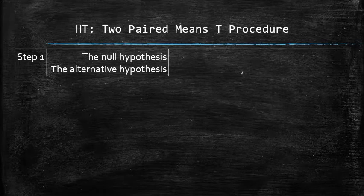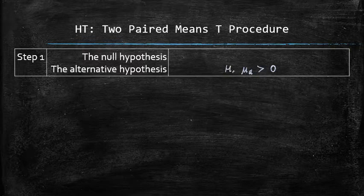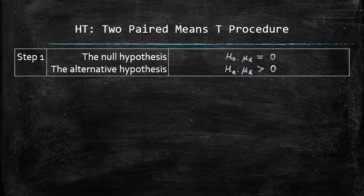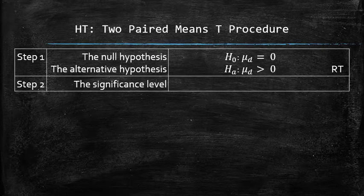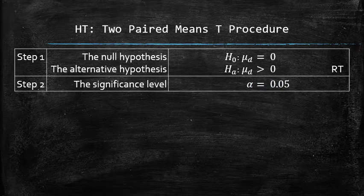Since our claim mu_d is greater than 0 is in the form of an inequality, we are going to set it up as an alternative hypothesis. Therefore, the null hypothesis, which is always in the form of an equation, must be mu_d equals 0. So the test is right-tailed. Step 1 is complete. The significance level can always be found in the text of the problem. In our case, it is 5%. Step 2 is complete.